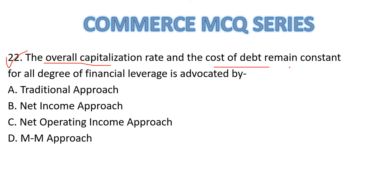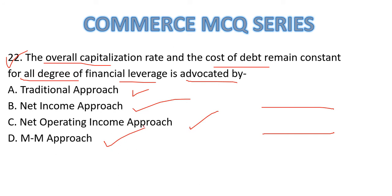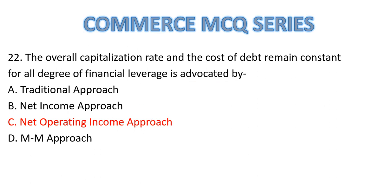The question says the overall capitalization rate and the cost of debt both remain constant for all degrees of financial leverage. Options are: Traditional Approach, NI Approach, NOI Approach, or MM Approach. If you have difficulty understanding the statement, let me know and I will explain all three approaches in an easy diagram form so you can draw it in the exam. The correct answer is the NOI Approach — that is where your overall capitalization rate and cost of debt both remain constant. Please comment whether this is a relevance theory or an irrelevance theory.